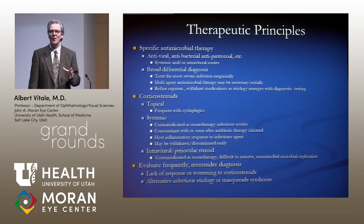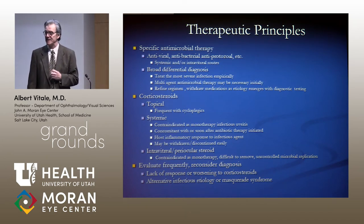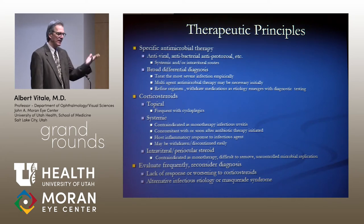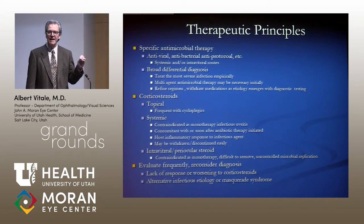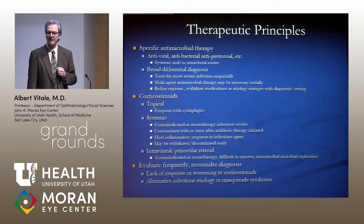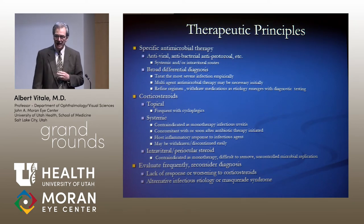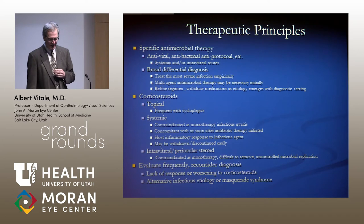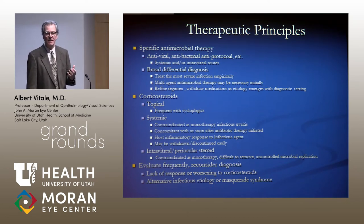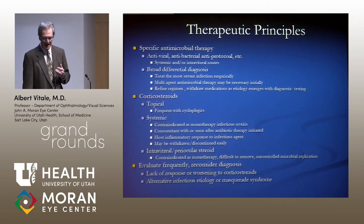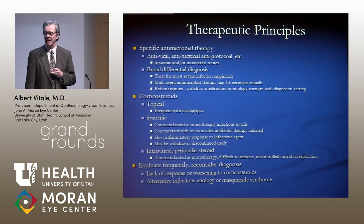Regarding therapeutic principles: do not treat an infection with steroids without appropriate specific antibiotic cover. If you see a patient with an indeterminate diagnosis, obtain laboratory testing and consider sampling the vitreous or anterior chamber, but treat broadly — treat the infection most likely to destroy the eye. Frequently use multi-antimicrobial treatment, then withdraw therapy as laboratory results become available. Corticosteroids are useful, particularly topically, but should never be used as monotherapy in patients with infectious uveitis. That said, corticosteroids can help treat the inflammatory component after appropriate antimicrobial therapy is started.